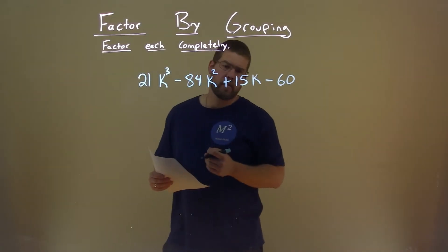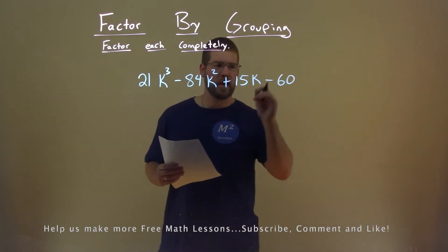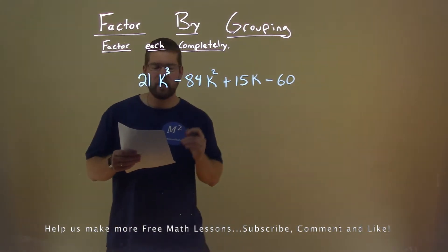We're given this problem right here, 21k³ - 84k² + 15k - 60, and we want to factor this completely.